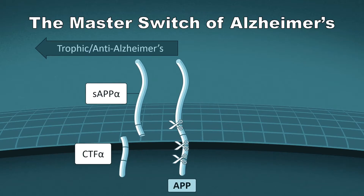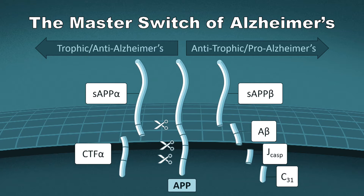Literally, you are putting your resources into memory formation and maintenance. On the other hand, in the presence of pathogens — things like viruses, bacteria, fungi, or toxins — or reduced support, APP is cut at three sites to produce four different fragments: SAPP beta, A-beta, which is the one we classically associate with Alzheimer's disease, J-CASP and C-31. These mediate retraction and protection. Your brain is now in protection mode, pulling back rather than in growth mode.